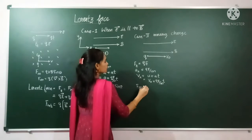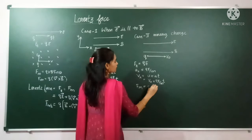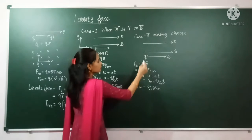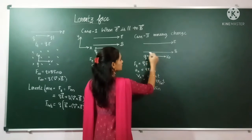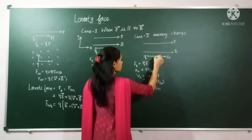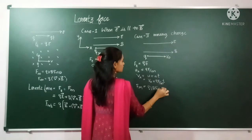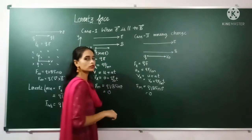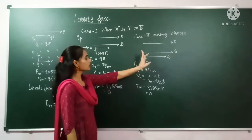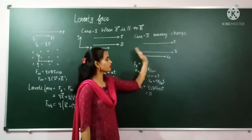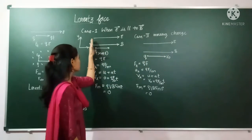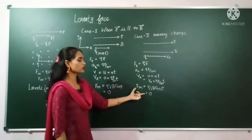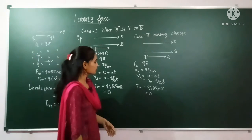For the magnetic force in Case 2, we have F = QVB sin θ. Since the charge is moving parallel to the magnetic field, θ = 0, so sin 0 = 0, and the magnetic force is 0. The charge moves in the direction of the electric field in a straight line. In both Case 1 and Case 2, the magnetic force is 0 and the charge moves in a straight line.